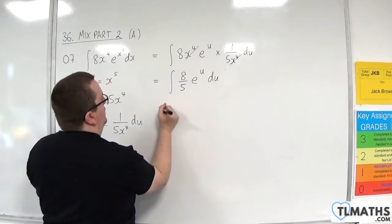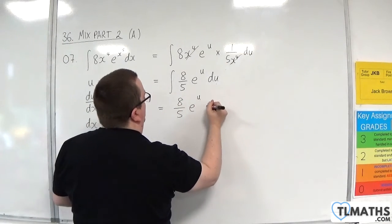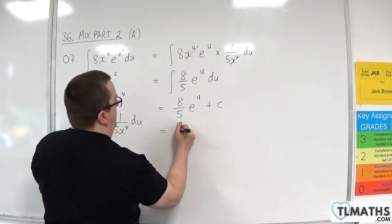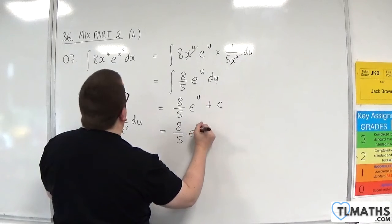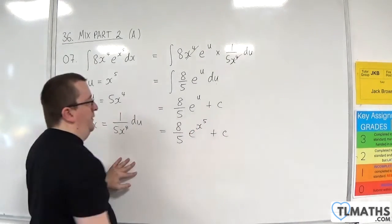Now e to the u just integrates to itself, so this is 8 fifths, e to the u, plus c. And then put the u back in, so e to the x to the 5, plus c.